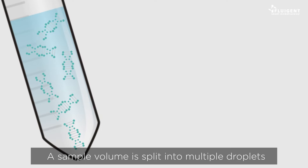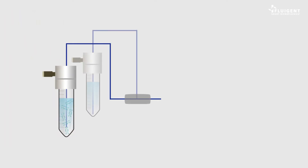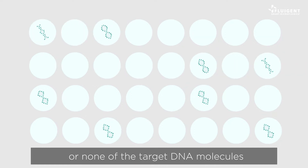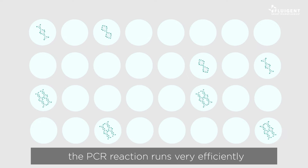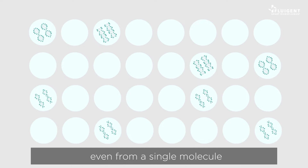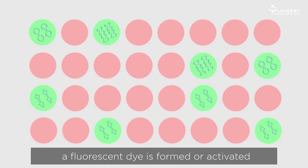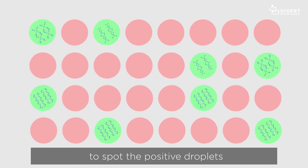The sample volume is split into multiple droplets. Each droplet contains either one or none of the target DNA molecules. Due to the small droplet volume, the PCR reaction runs very efficiently, even from a single molecule. During amplification, a fluorescent dye is formed or activated to spot the positive droplets.